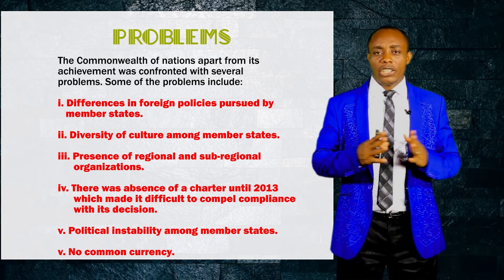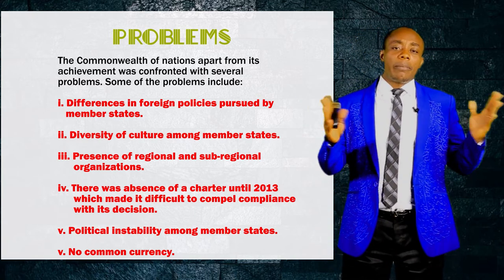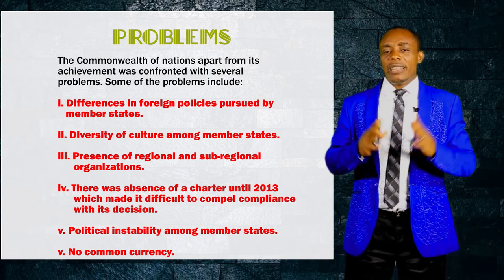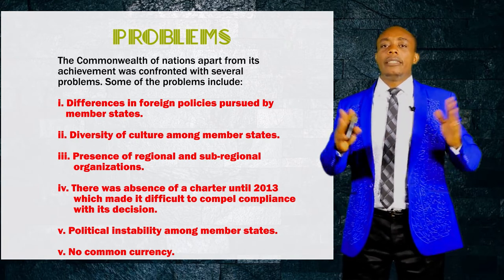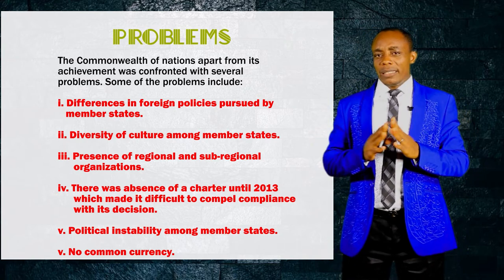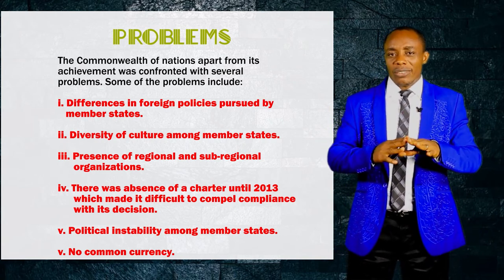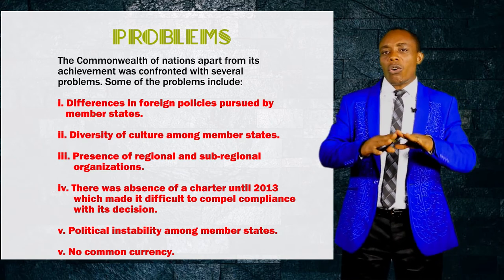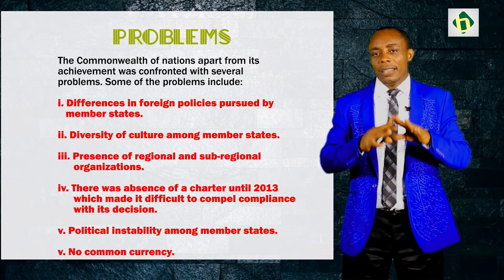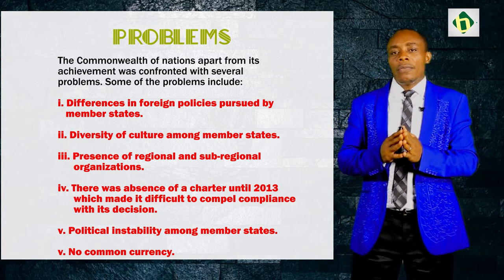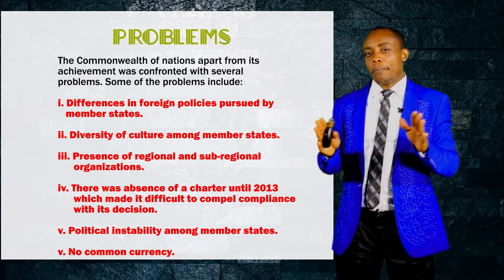Having looked at the principal organs of the organization, let's look at some problems facing the Commonwealth. Some of the problems facing the Commonwealth of Nations include differences in foreign policies by member states. These foreign policies are different — they have different objectives, different aims, different targets, and different aspirations. And so it is difficult for the Commonwealth of Nations to achieve some of its aims and objectives because of these differences in foreign policies of member states.